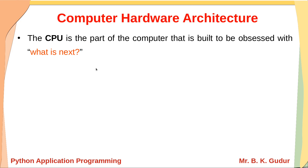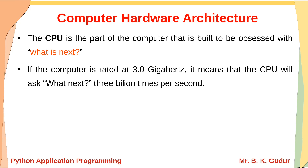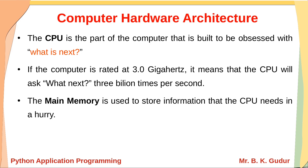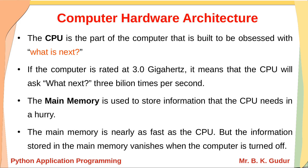The CPU is built to be obsessed with 'what next?' — continuously asking that question. If a computer is rated at 3.0 GHz, it means the CPU asks 'what next?' 3 billion times per second, and you must answer 3 billion times per second. The main memory is used to store information that the CPU needs in a hurry. Every time the CPU asks what to do next, the answer is fetched from main memory. The main memory is nearly as fast as the CPU.